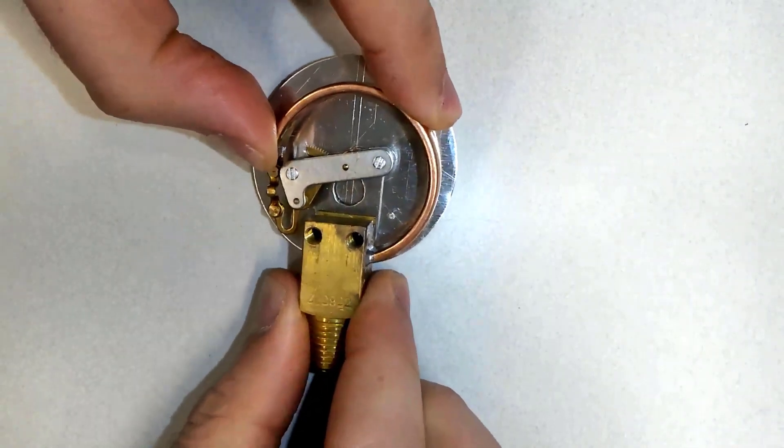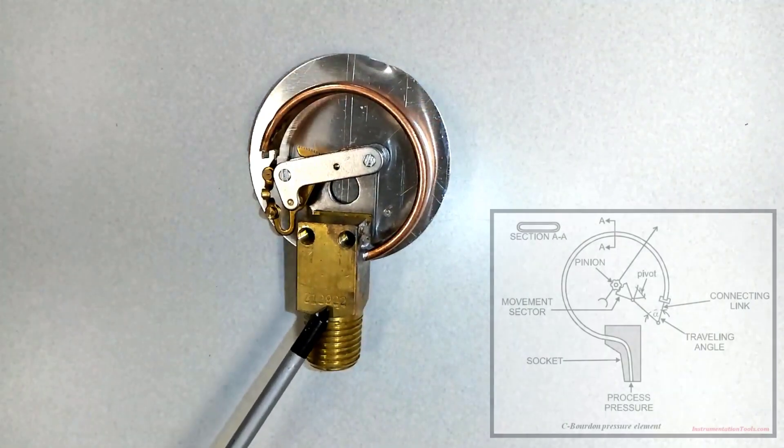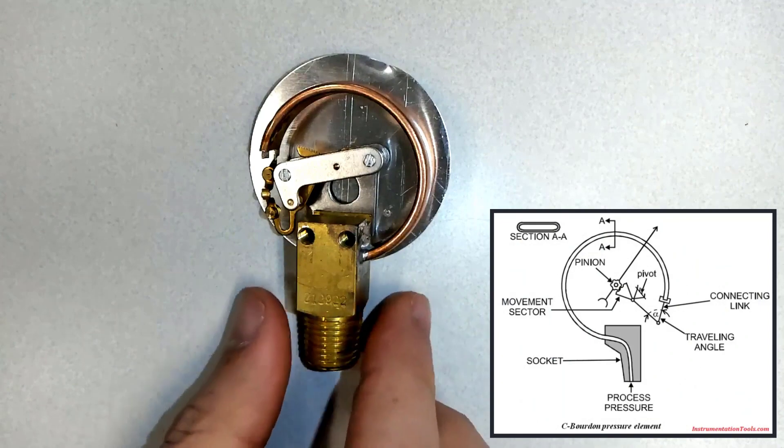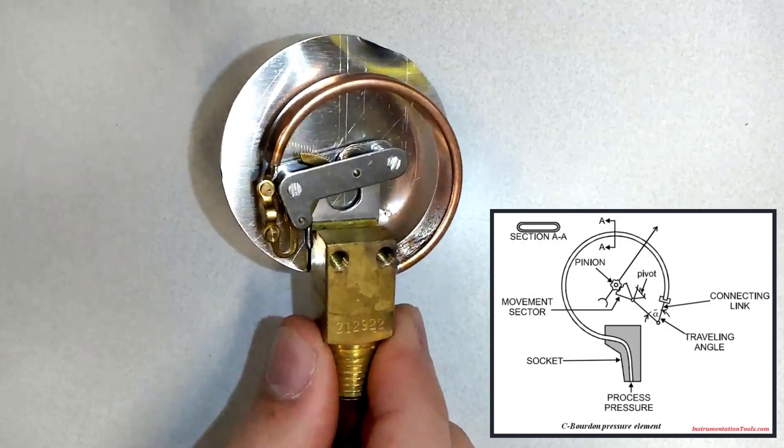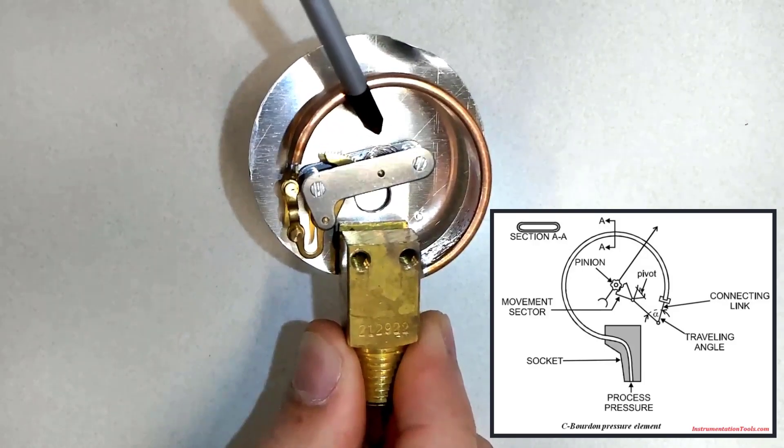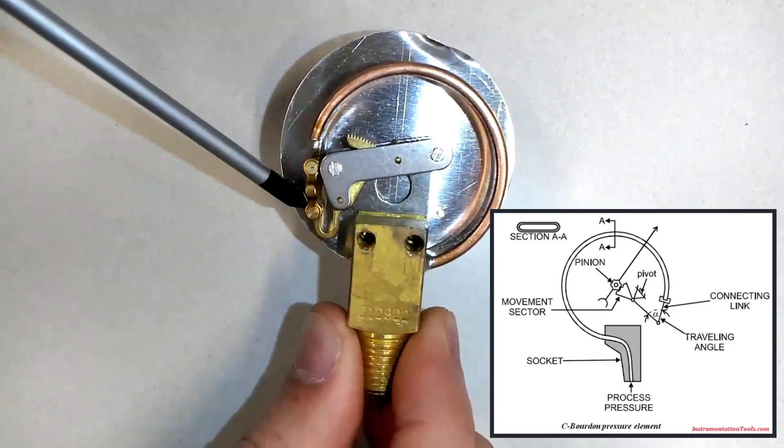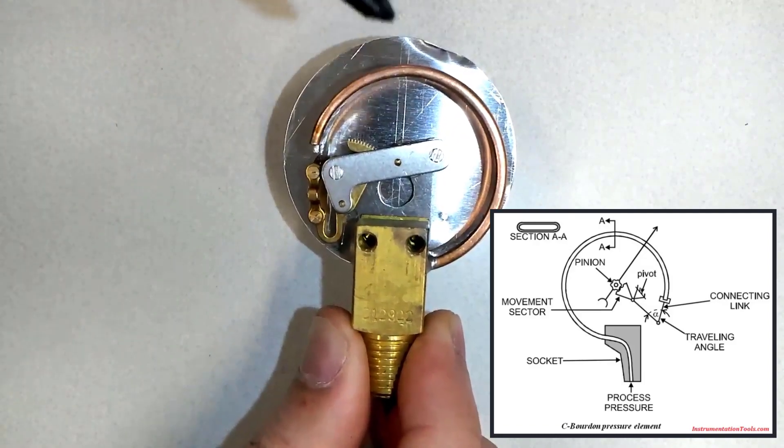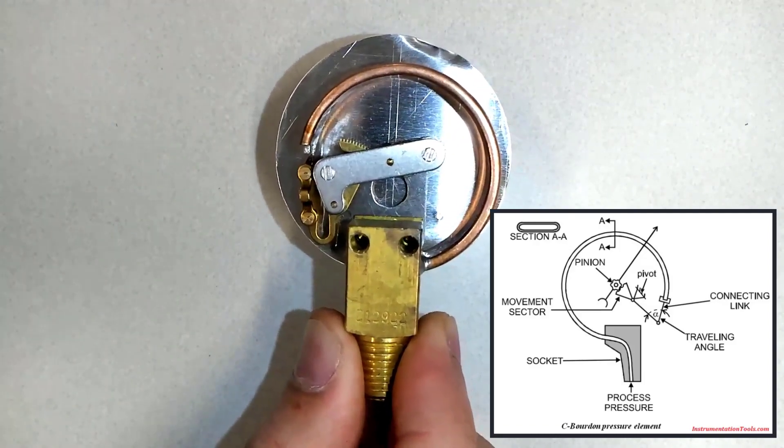This part is called the socket. As you can see, there are some gears over there and a spring right here. There are links that connect the Bourdon tube to the gear and spring, and a part called the pinion.